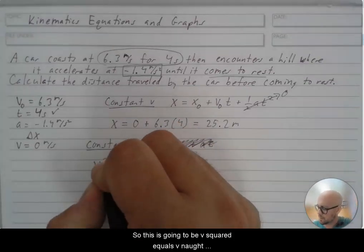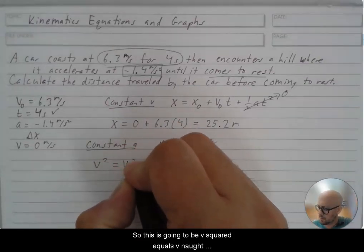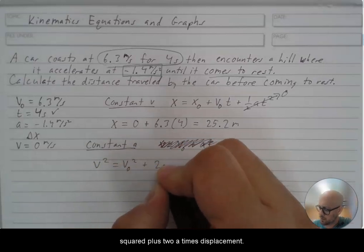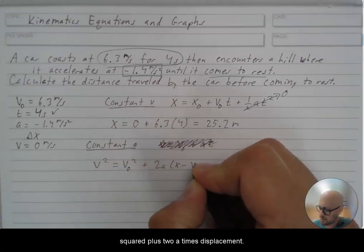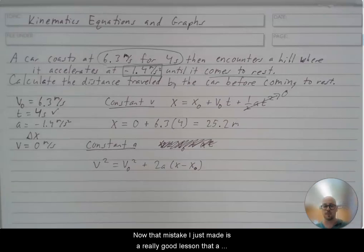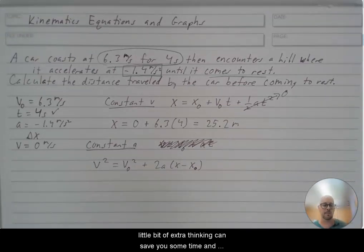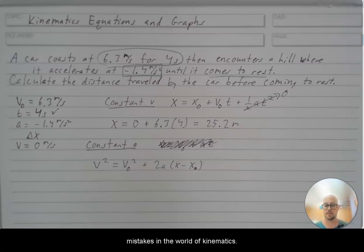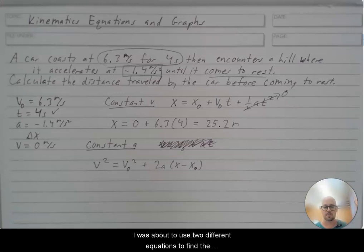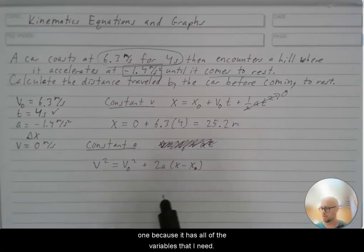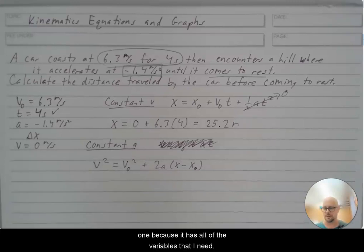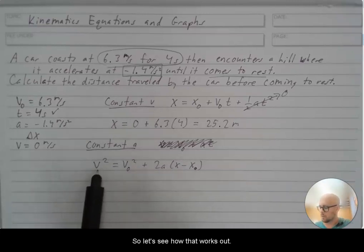You can use the third kinematics equation to figure out the distance it moves. So this is going to be v squared equals v naught squared plus 2a times displacement. Now, that mistake I just made is a really good lesson that a little bit of extra thinking can save you some time and mistakes in the world of kinematics. I was about to use two different equations to find the distance, but I'm just going to use this one because it has all of the variables that I need.